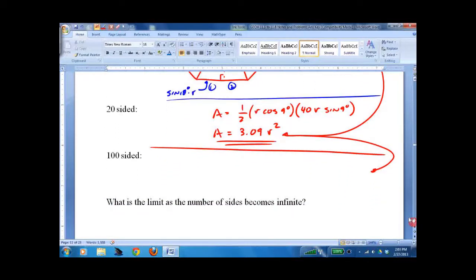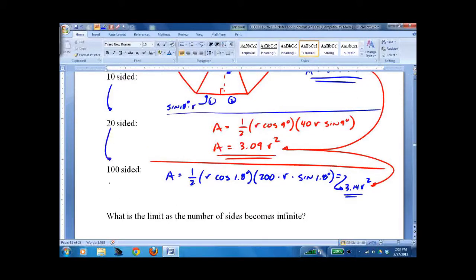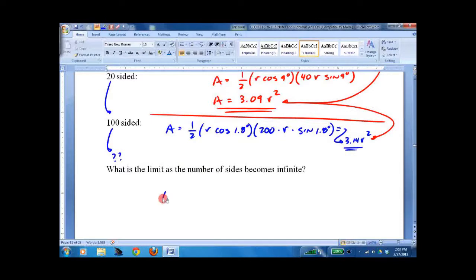We can go up to 1,000 easily. But if we do it for a 100-sided shape, again, we get one-half r times cosine 1.8 times 200 times r times sine of 1.8. And we end up with 3.14 r squared. So if we keep increasing this number of sides here, 10 to 20, 20 to 100, 100 to some really big number, we find that the limit in front of the r squared is pi.